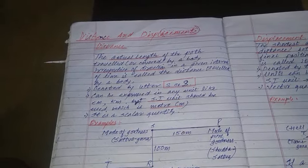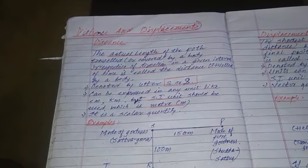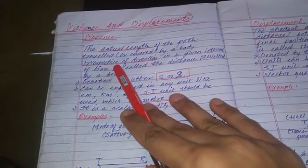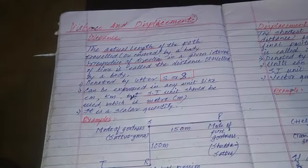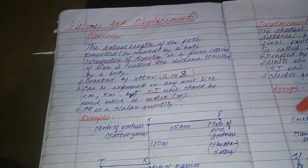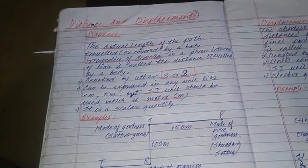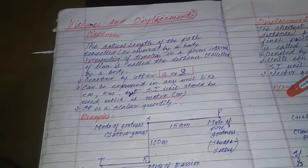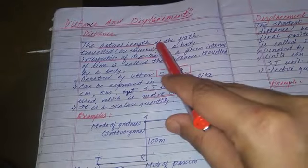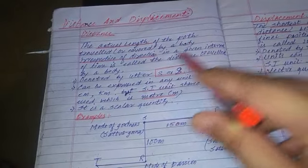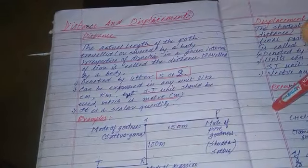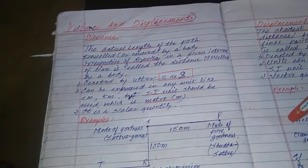Dear students, it's my pleasure seeing you watching this video of distance and displacement. So what actually is distance? You have been traveling thousands of kilometers from your childhood till today to reach this place. So 1000 kilometers means that is the actual length which you have traveled in a given interval of time, and that time might be 14 to 15 years of age.